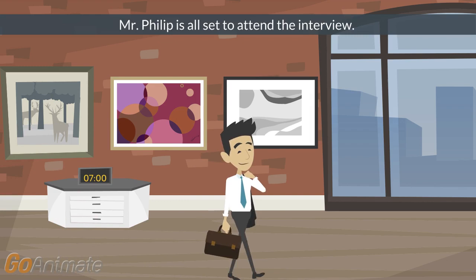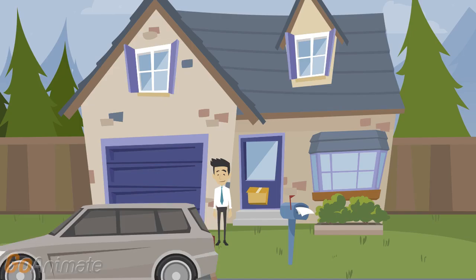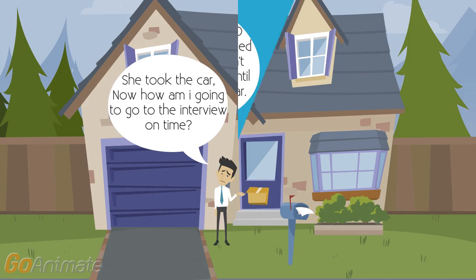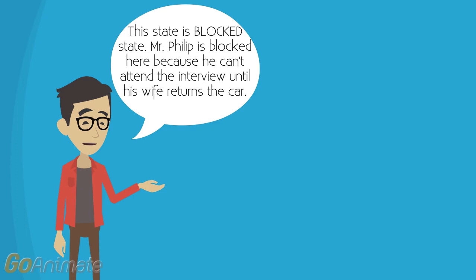Mr. Philip is all set to attend the interview. Oh no! How can I forget? It's Tuesday. My wife has a cooking session today — she took the car. Now how am I going to go to the interview on time? This state is the blocked state. Mr. Philip is blocked here because he can't attend the interview until his wife returns the car.